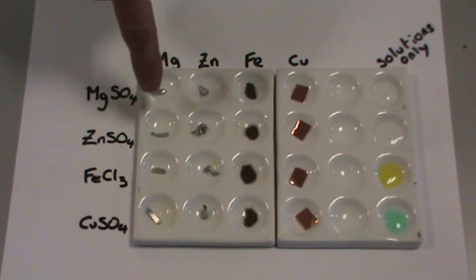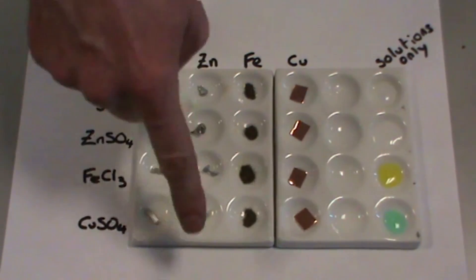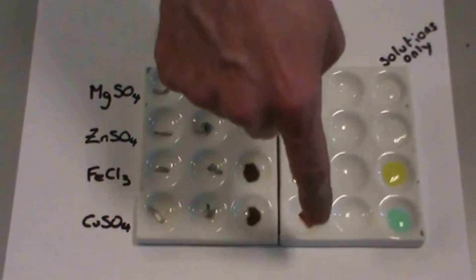Here we have a piece of magnesium, a piece of zinc, some iron filings, and a piece of copper.